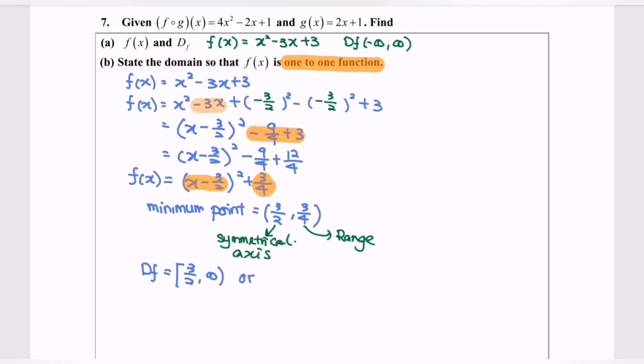Or the domain for f(x) to be one-to-one function will be negative infinity until 3 over 2.